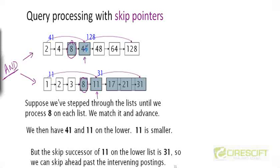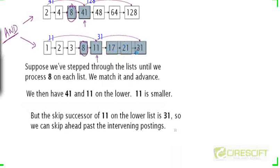Now 11 is less than 41, so we need to increment this pointer. But instead of incrementing to point to 17, we first check the skip pointer and see where it goes. It turns out it goes to 31, and 31 is still less than 41. So why look at the intermediate results? We can skip directly to 31 by following the skip pointer, jumping over those intervening postings. That's why they are called skip pointers.